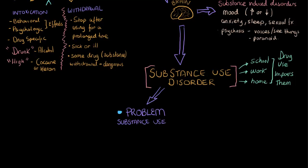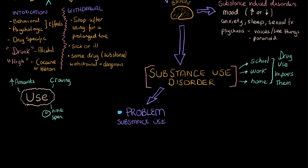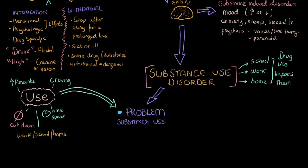So how do we know someone has a substance use disorder? One way is by looking at their use. Are they using increasingly large amounts? Are they experiencing increasing craving or strong desires to use? Are they spending more and more time recovering from or trying to get the substance? Are they failing to cut back or cut down? And are they experiencing problems related to their obligations at work, school, or home? If these things are appearing, that really suggests there may be a substance use disorder.